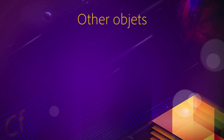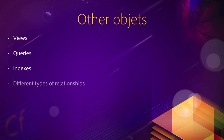We have other objects as well in the database: we have views, queries, indexes, and different types of relationships. We talked about the one-to-many relationship, but we can also have a one-to-one relationship and a many-to-many relationship. We won't need all those objects in this course, but when we do need them — for example, we will work a lot with queries — I will introduce those objects at that time. For now, you know enough to start taking a look at the database that we will use during this course.